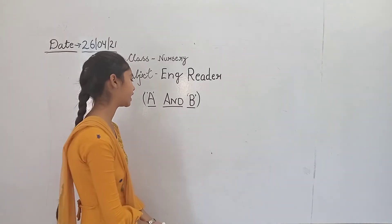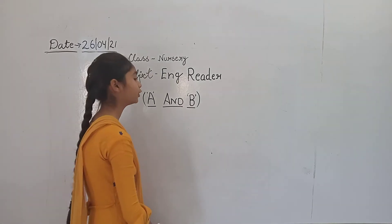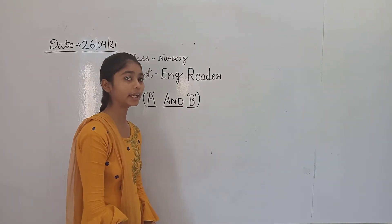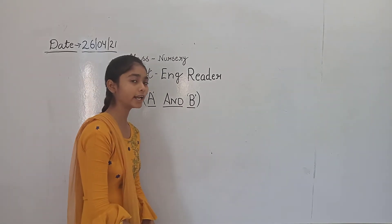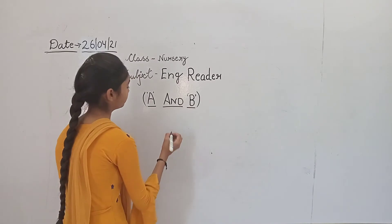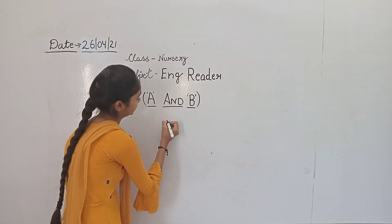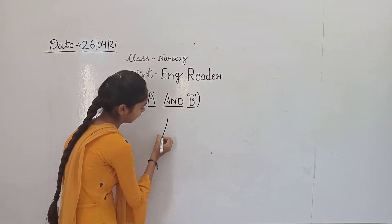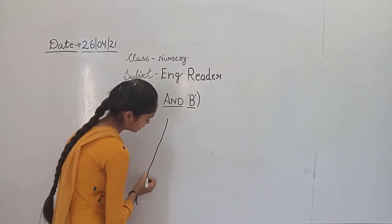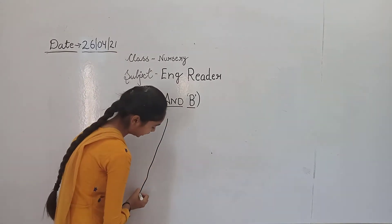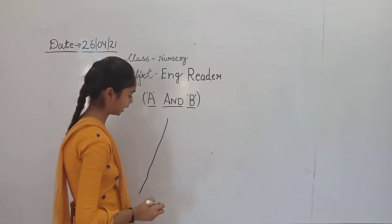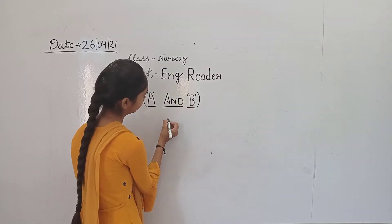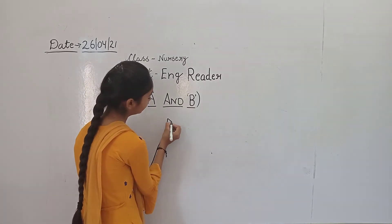So let's start now. What are we learning? A for apple. This is our slanting line. A for apple.